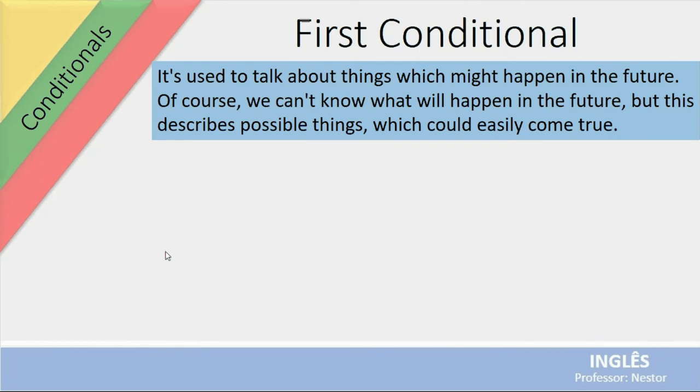First conditional. It's used to talk about things which might happen in the future. Pay attention. Which might happen. Que podem acontecer. Não é certeza que essas ações acontecerão. Mas que podem acontecer. Of course, we can't know what will happen in the future. But this describes possible things which could easily come true.